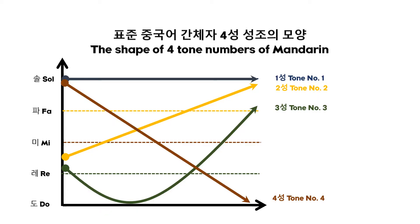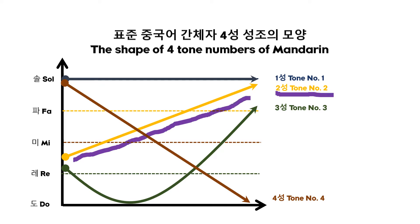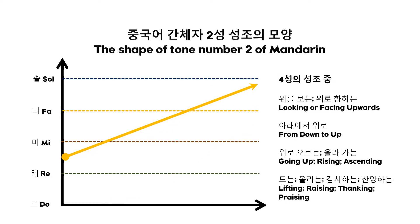I assume you already know there are four tones in Mandarin Chinese. We are going to look at tone number two. We are going to start with its shape. Like tone number one, we are going to derive four major concepts from the shape of tone number two of Mandarin.